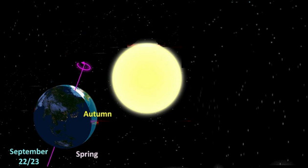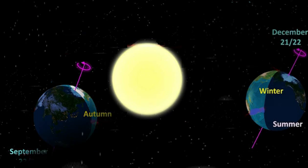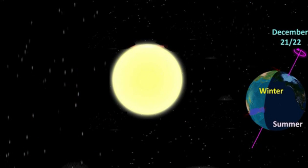It is spring in the southern hemisphere and autumn in the northern hemisphere. As you can see here in December, the south pole is facing the Sun while the north pole is facing away from it. So it is summer in the southern hemisphere and winter in the northern hemisphere.